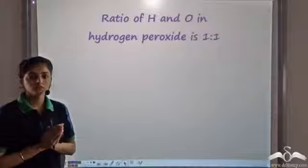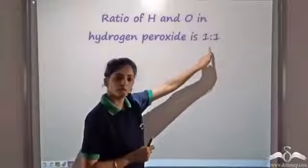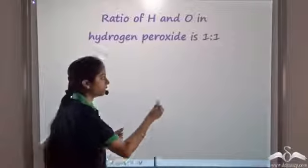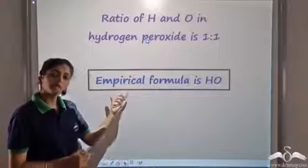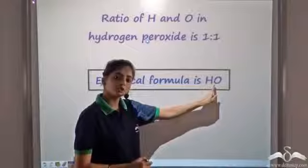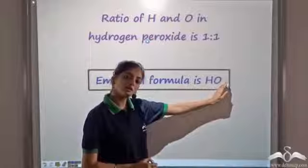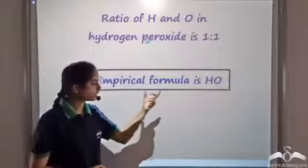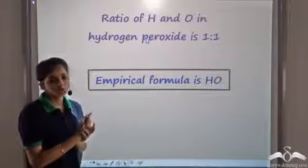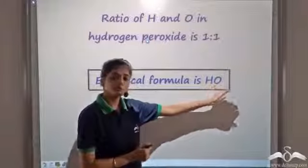The ratio of hydrogen and oxygen in hydrogen peroxide was found to be 1 is to 1. When we know the ratio of the two atoms present in a compound, we get the empirical formula of the compound. So the empirical formula of hydrogen peroxide is HO — the ratio of hydrogen atoms and oxygen atoms is 1 is to 1. Empirical means from experiments or from experience, and this formula shows the ratio of the two atoms present in the molecule.